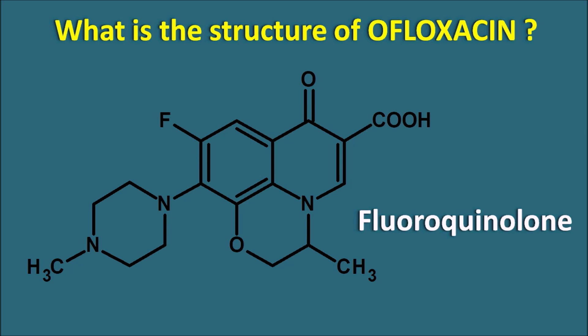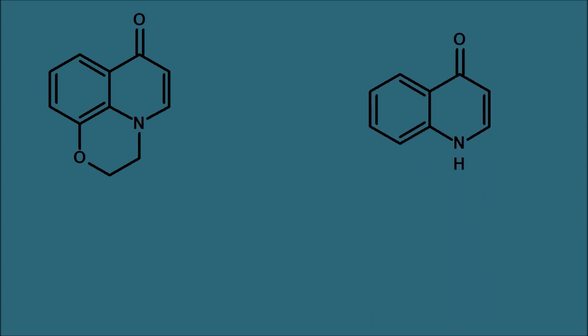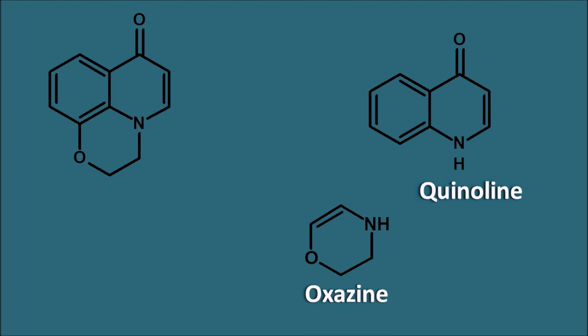In order to write the IUPAC name of ofloxacin, first of all let us take the basic ring of ofloxacin without any attachments. Here you can observe the three cycles, so it is a tricyclic compound. But as the drug is coming from the fluoroquinolones, we can consider one of the ring systems as the quinoline ring system. This quinoline ring system is going to be fused with another ring system — this is the oxygen and nitrogen containing ring system, that is the oxygen.